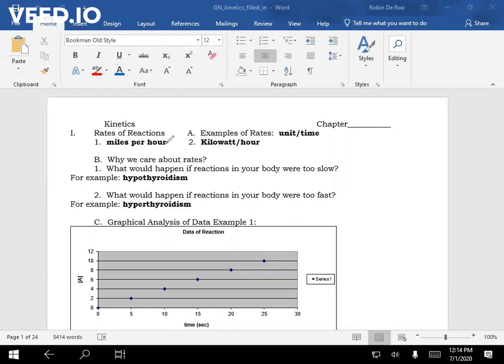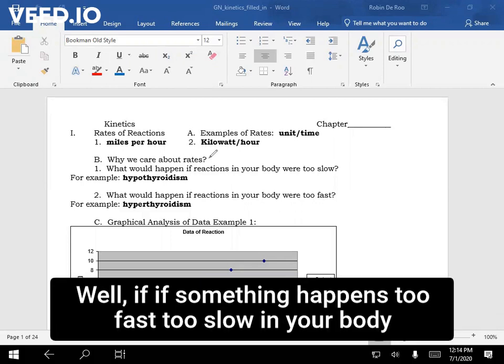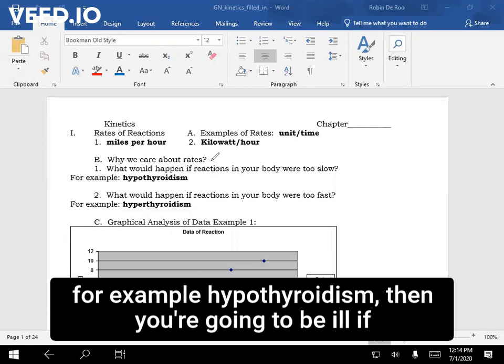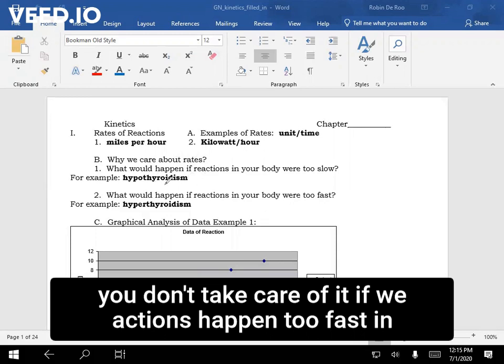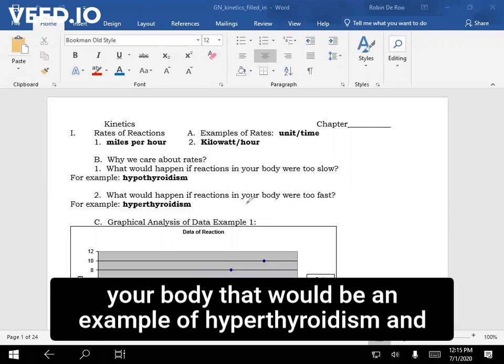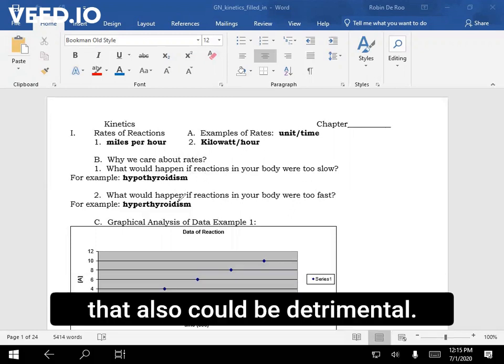why do we even care about rates? Well, if something happens too slow in your body, for example, hypothyroidism, then you're going to be ill if you don't take care of it. If reactions happen too fast in your body, that would be an example of hyperthyroidism and that also could be detrimental.